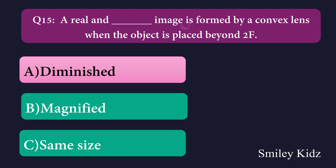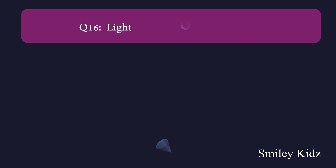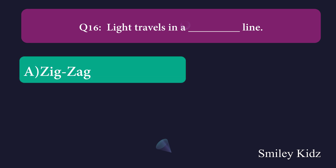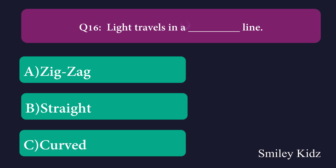Question number sixteen: Light travels in a dash line. Option A: zigzag, Option B: straight, Option C: curved. The right answer is straight. Light travels in a straight line.